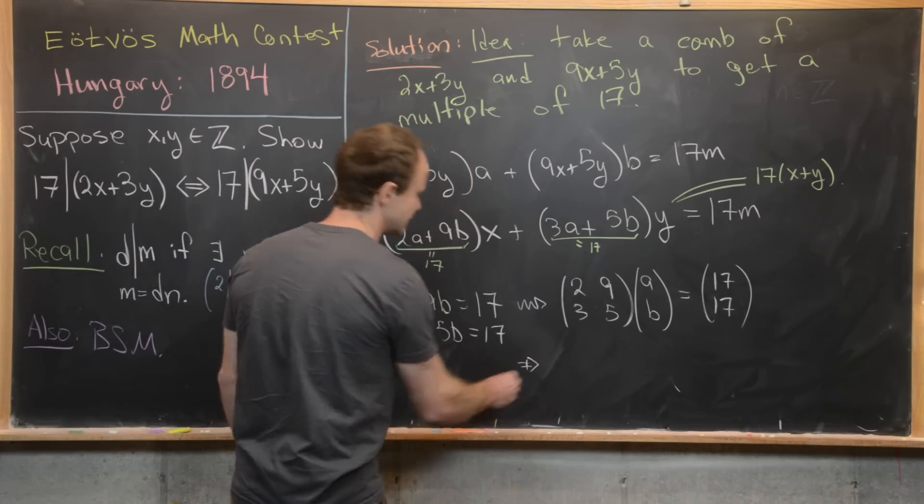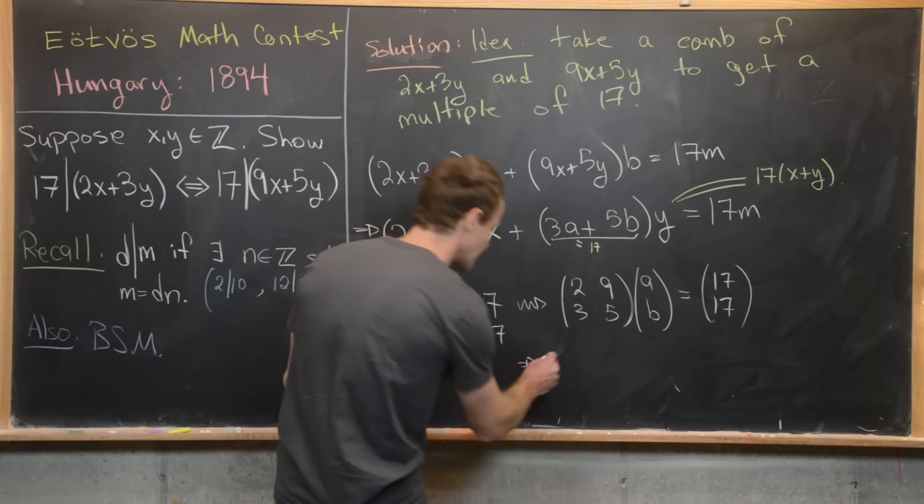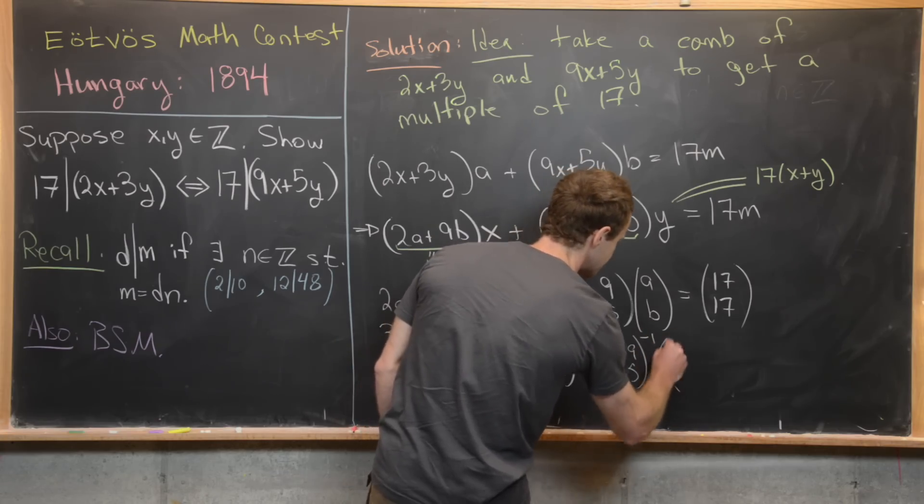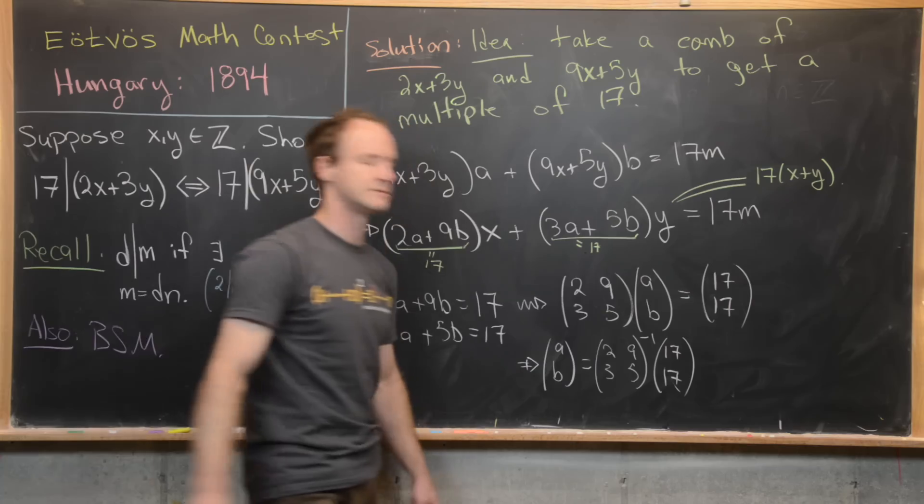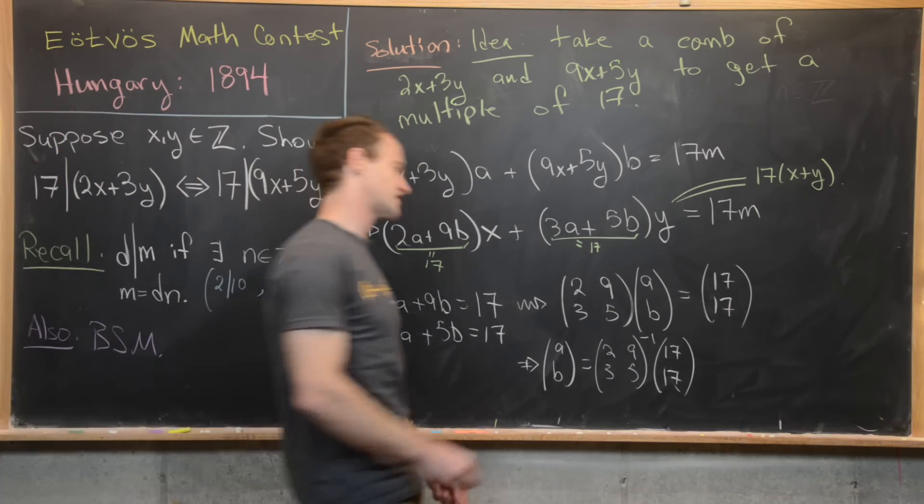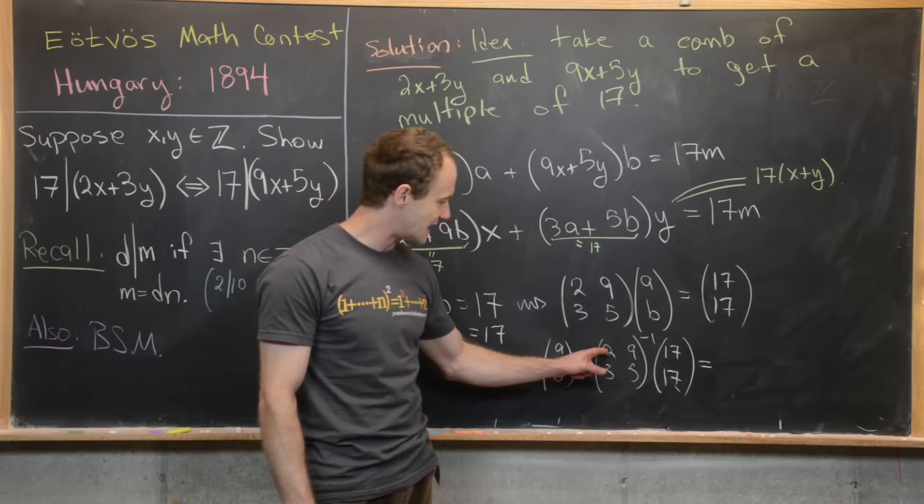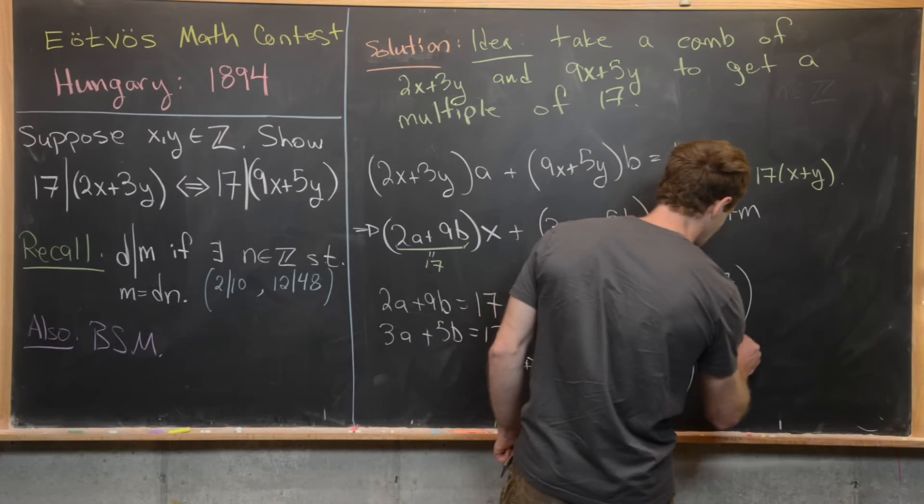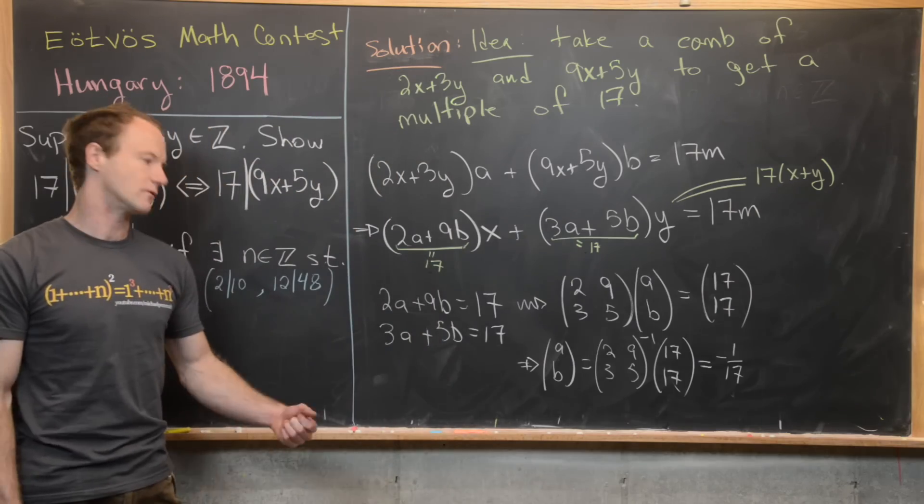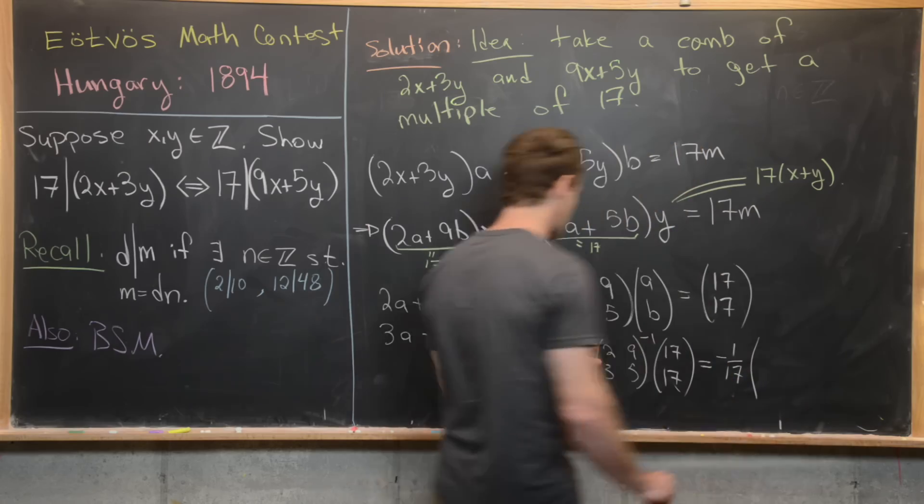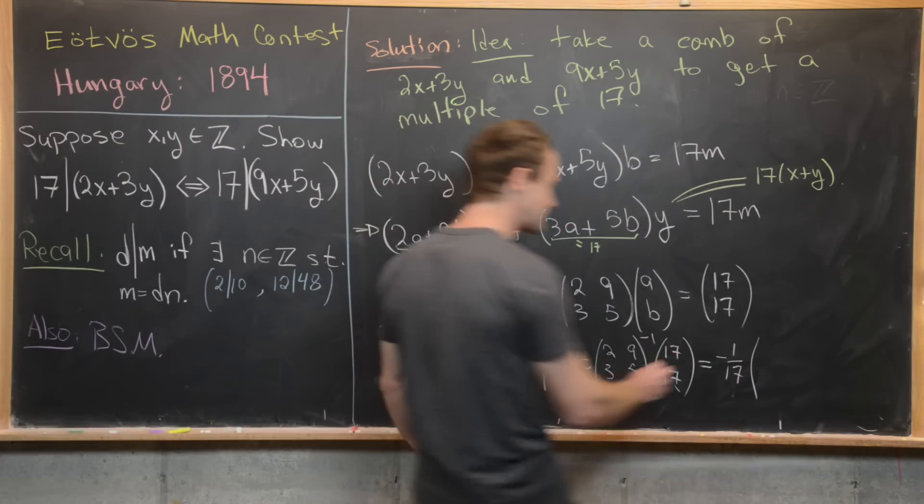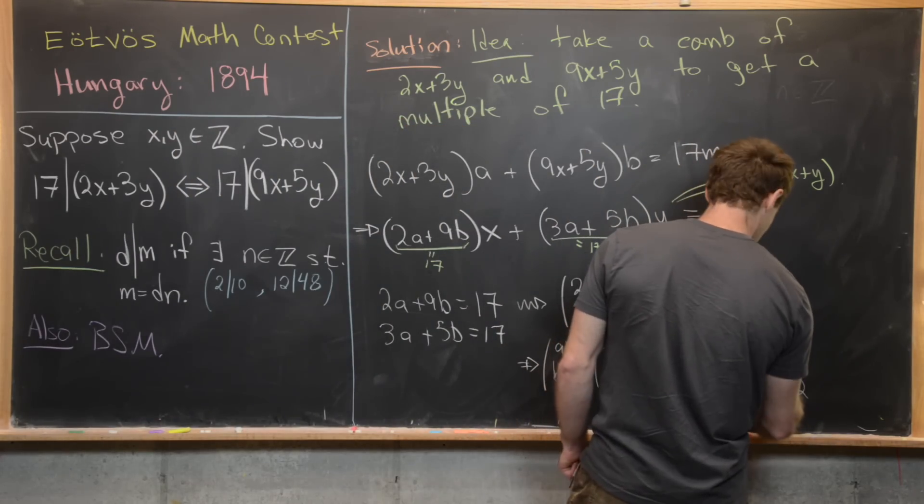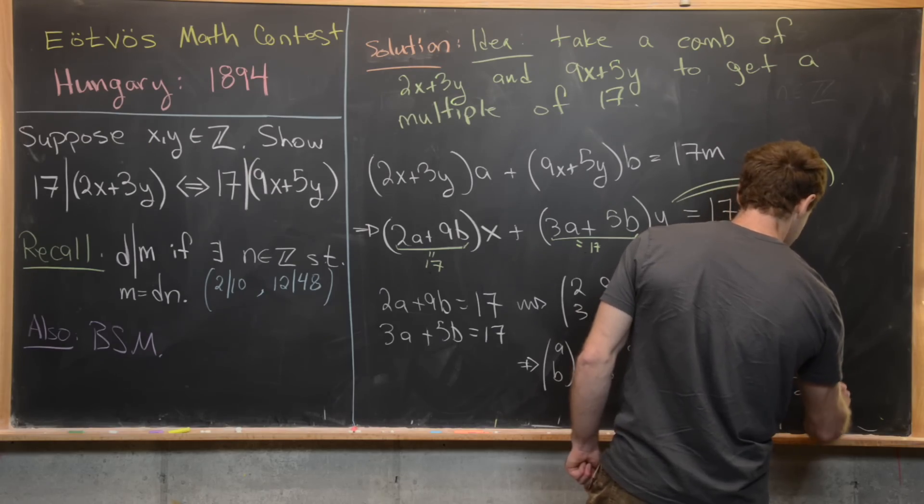Okay, so now from here, what we'll do is multiply both sides by the inverse of this matrix. So that's going to give us ab equals 2 9 3 5 inverse times 17 17. So let's see what we get when we take the inverse of that matrix. So we're going to get one over the determinant. So notice the determinant is two times five, which is 10 minus nine times three, which is 27. So we've got 10 minus 27, which is negative 17. So that's pretty nice. And now we can kind of see the motivation for this problem being written in the first place. So there's our determinant. And now we've got to switch the guys that are on the diagonal. So this is going to become 5 and 2 as the diagonal is switched, negate the things off the diagonal. So minus 9 minus 3. And now we need to multiply that into 17 17.